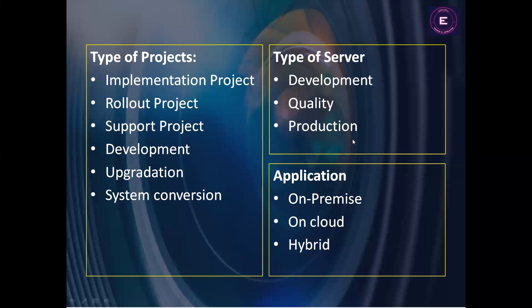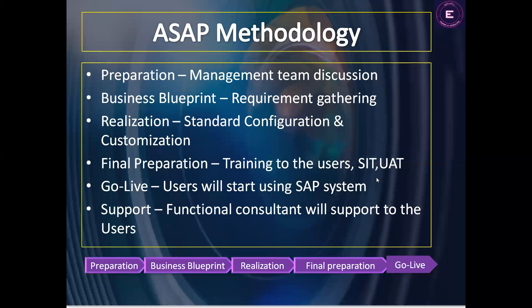Once testing in quality is complete and all activities are working fine, we move to production. Production is the server where we hand over the system to the client, and users start using it. These are the basic things we should know about server types.